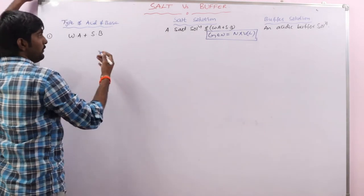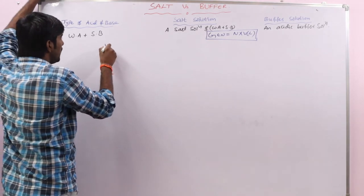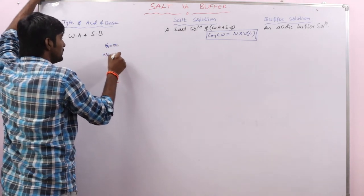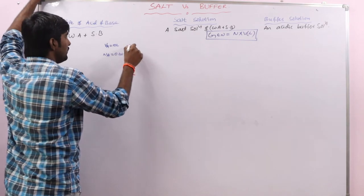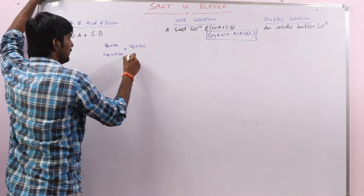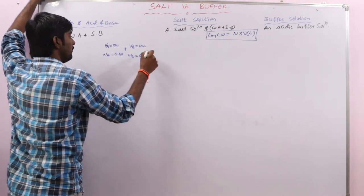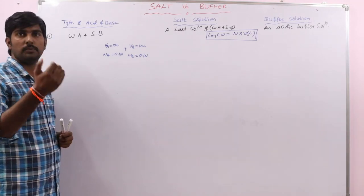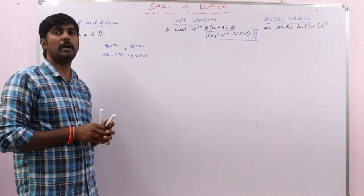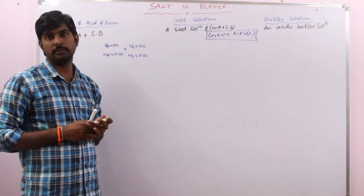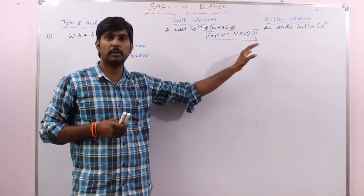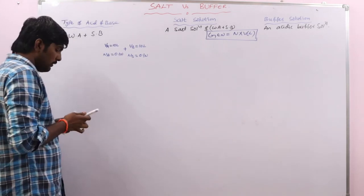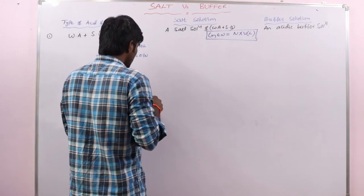Now suppose this information is given in a question: volume of acid is 10 liters with normality 0.1 N, mixed with a base of volume 10 liters and normality 0.1 N. We need to find the pH of the resulting solution. First, we should identify whether it is a salt solution or a buffer solution, because we use different formulas to calculate pH for each.